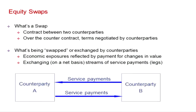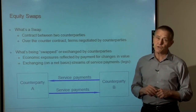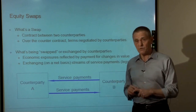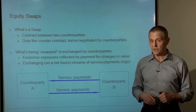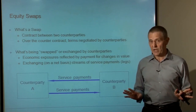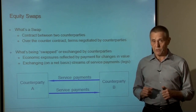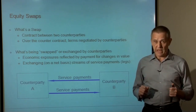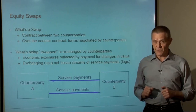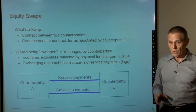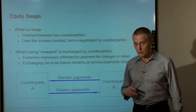A swap is a contract between two counterparties, and it's an over-the-counter contract. Unlike exchange-traded contracts — where the exchange itself establishes the terms, as with exchange-traded futures or options — swaps are purely over-the-counter, meaning off-exchange. The implication is that the two parties to the contract are actually negotiating all the terms: not just what sort of exposure is being created, but also the length of the contract, the frequency of computing the value of those streams of service payments, and how often they'll make monetary adjustments.